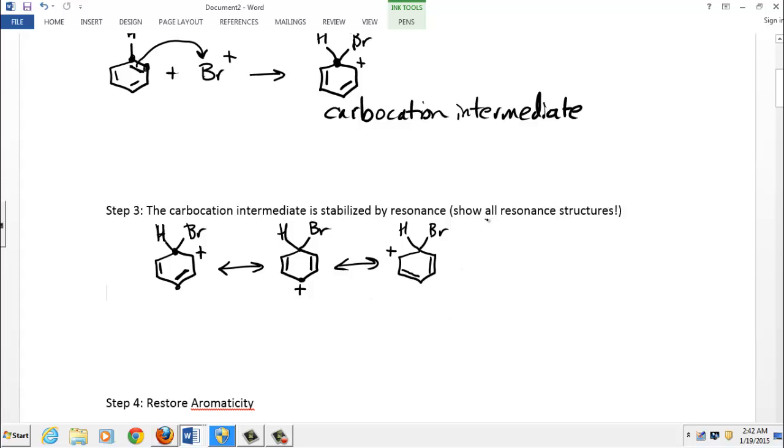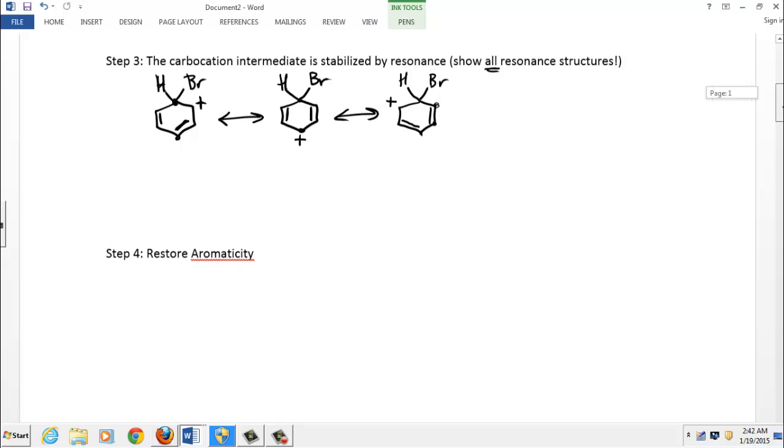We need to show all the resonance structures. At a minimum, every electrophilic aromatic substitution reaction has three resonance structures. But we'll see soon that other groups on the ring may cause additional resonance structures to form. So to get full credit, we need to show those additional resonance structures also, not just these three. Now because of benzene, there are only three here.